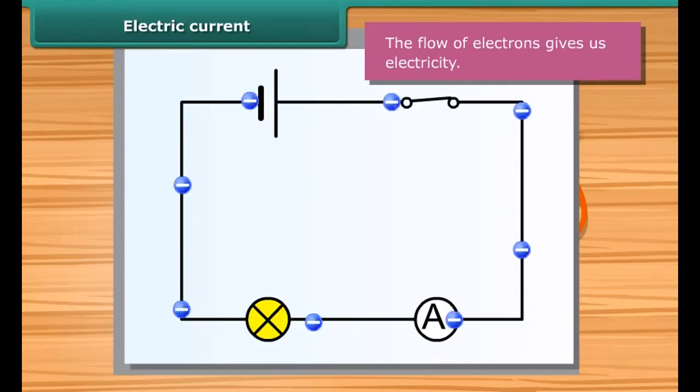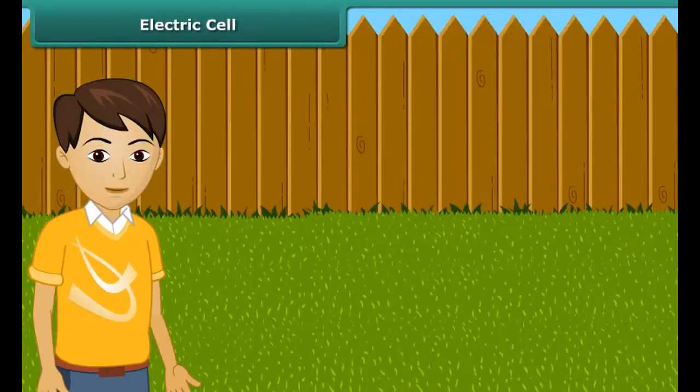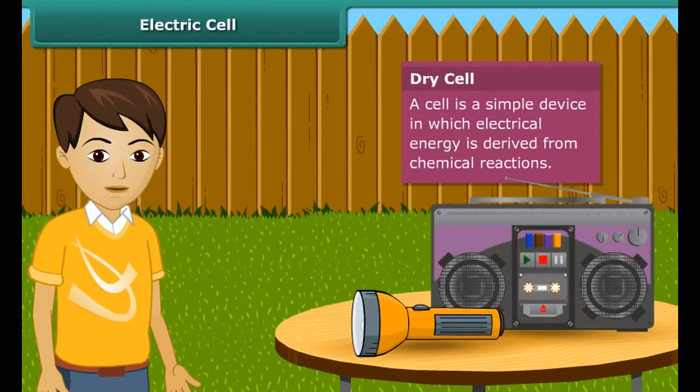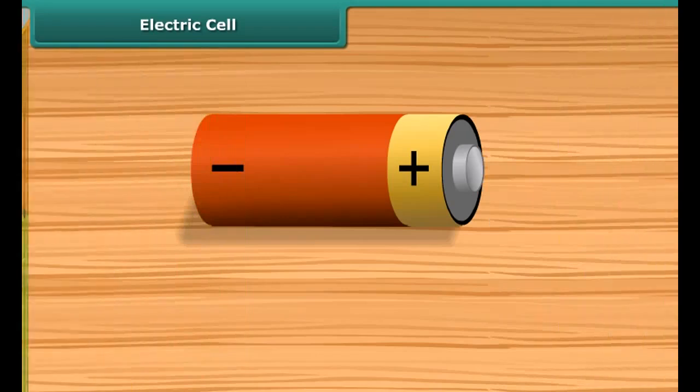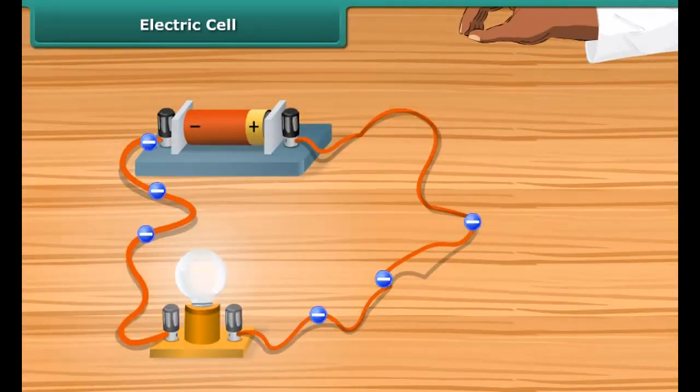The moving or flowing charges produce an electric current. An electric current consists of a movement of negative charges, that is electrons. The flow of electrons gives us electricity. Electric current is measured by ammeter.